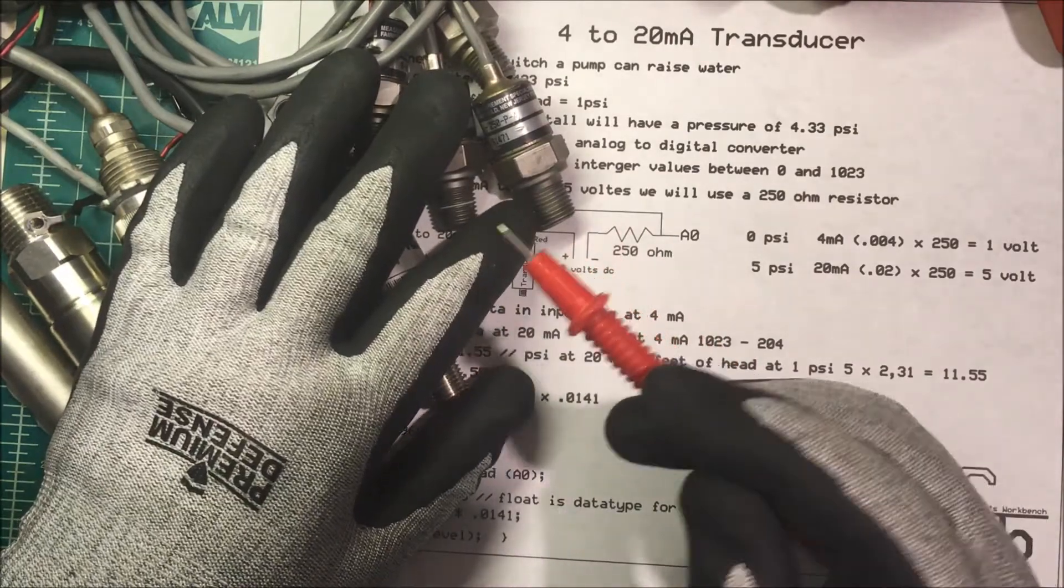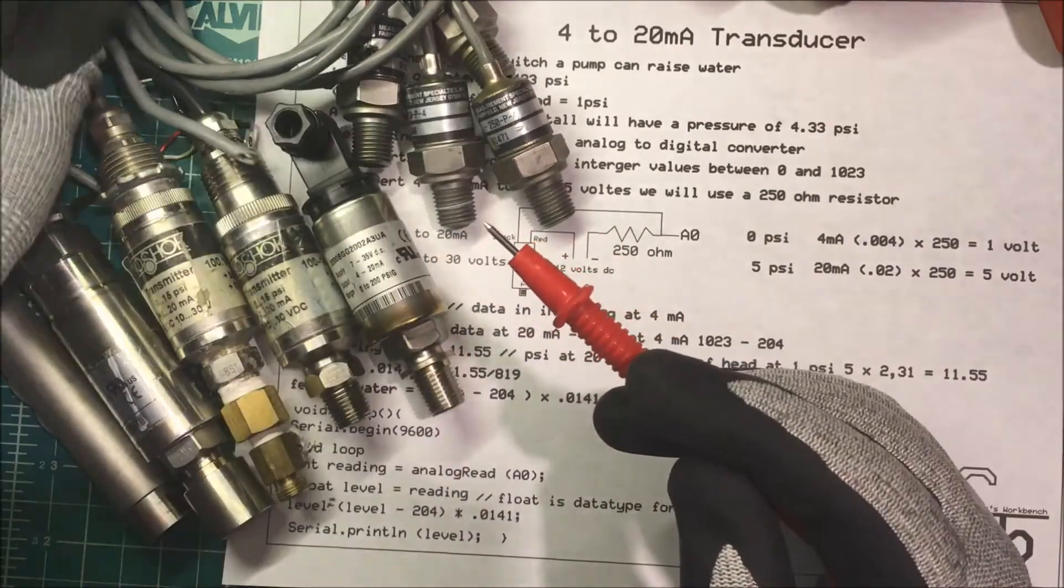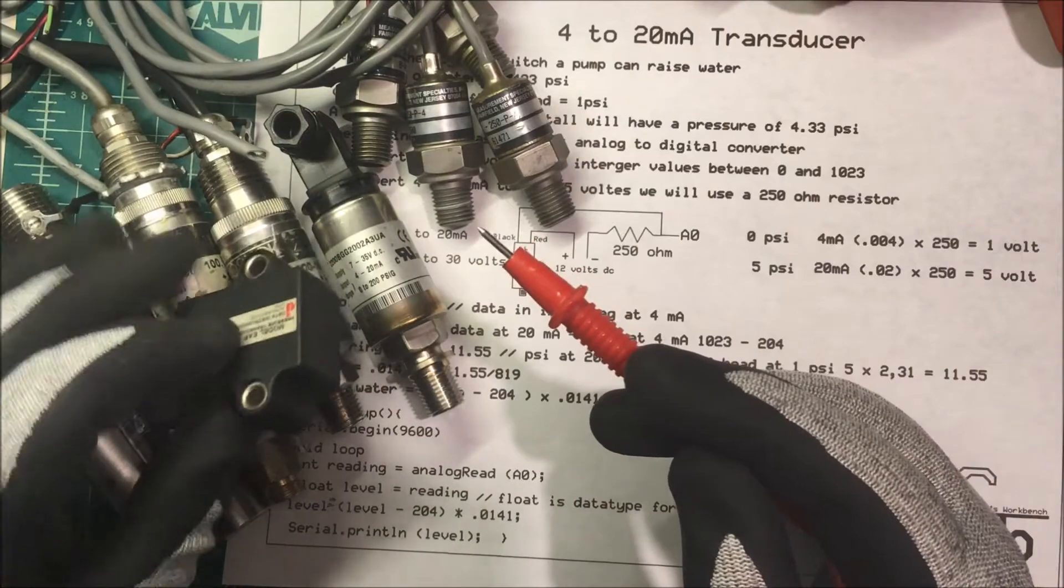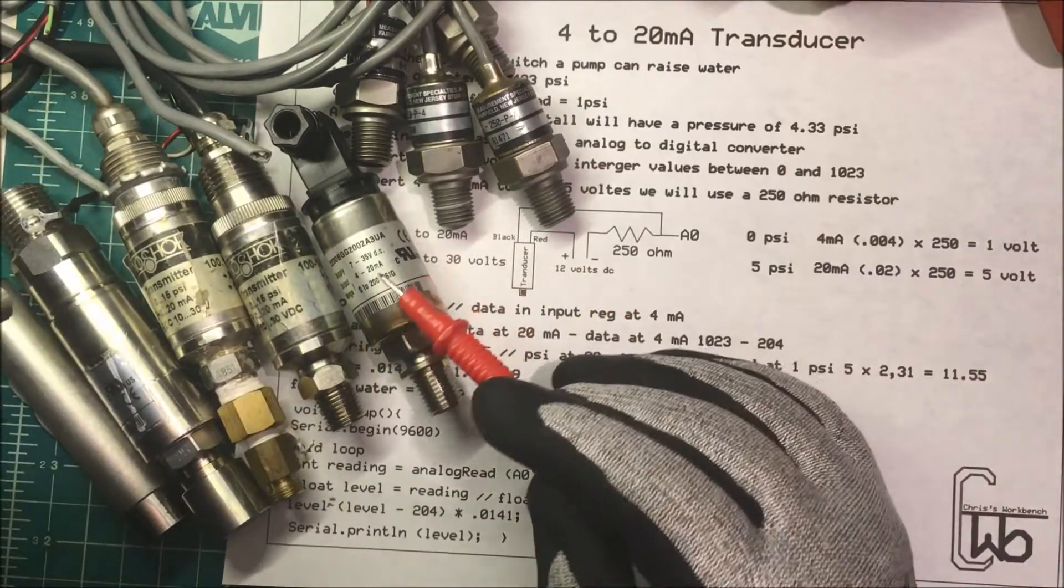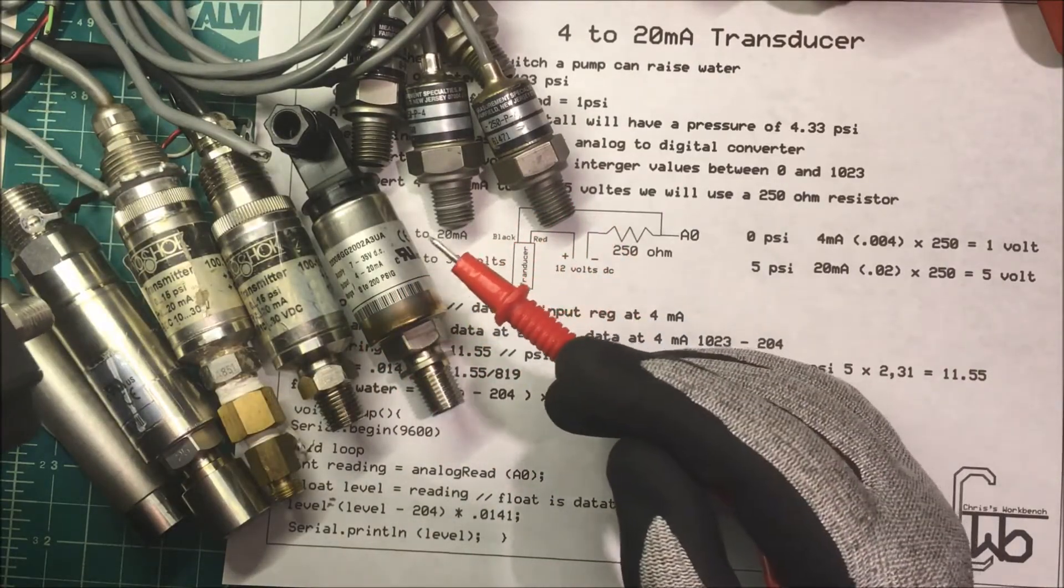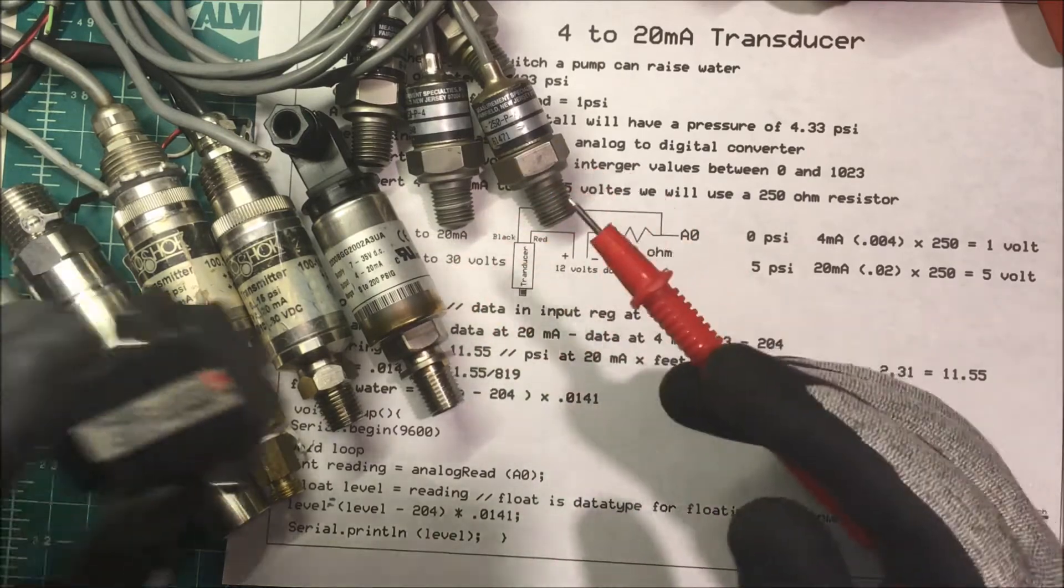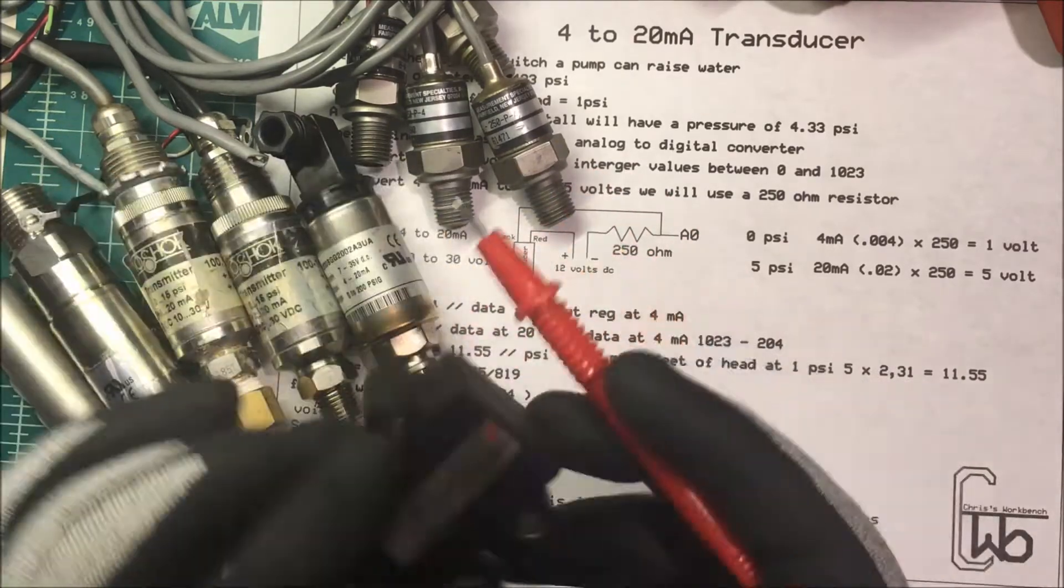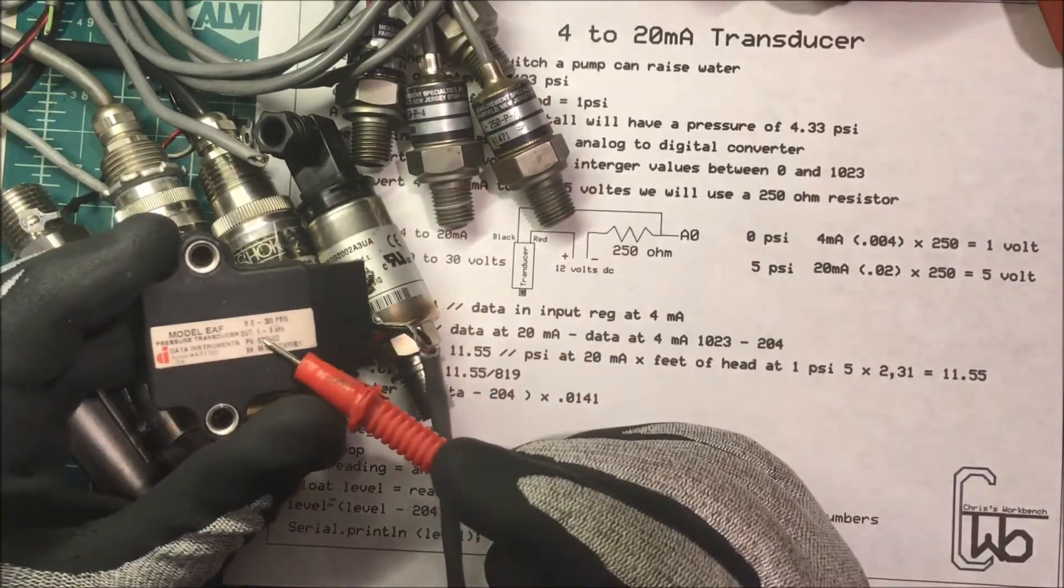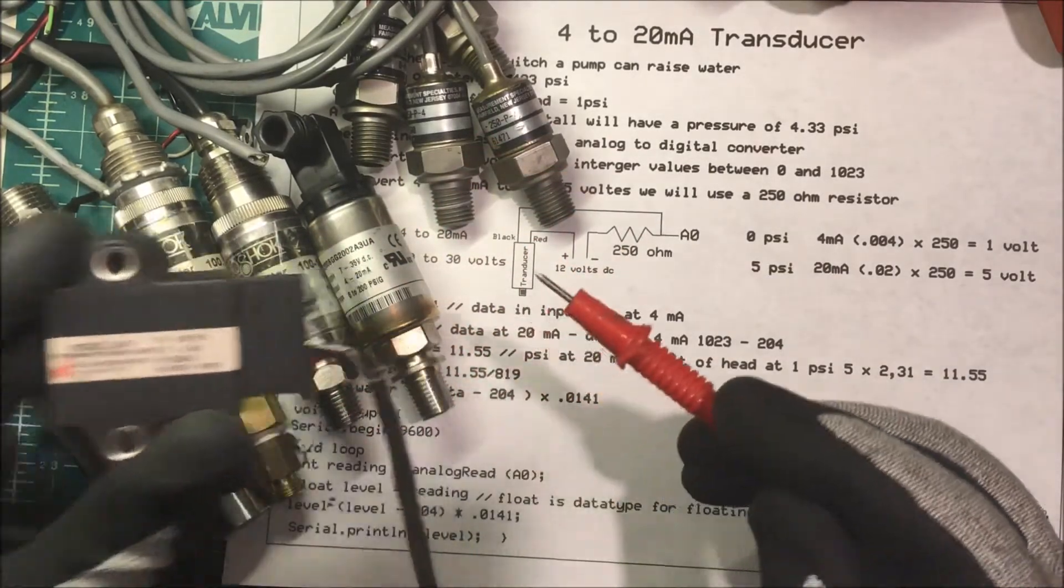These are all output of current, 4 to 20 milliamps. Some units will put out a voltage, 0 to 5 or 0.5 to 4.5 or 0 to 10 volts. These put out a frequency. This one's from 1 to 6 kilohertz.